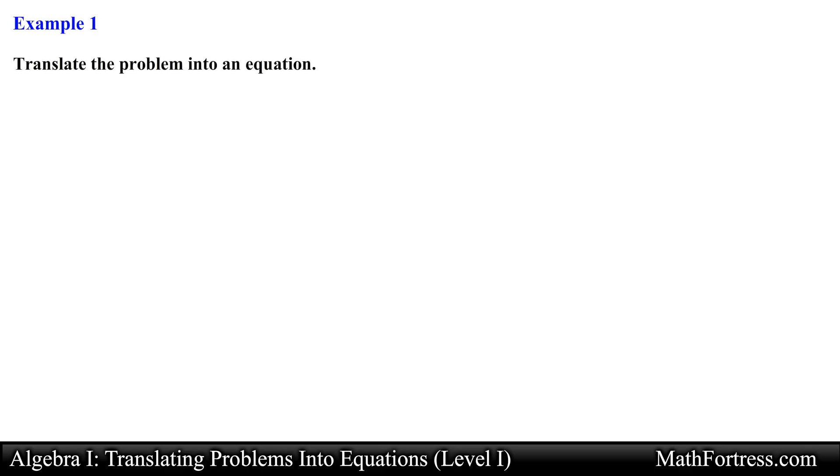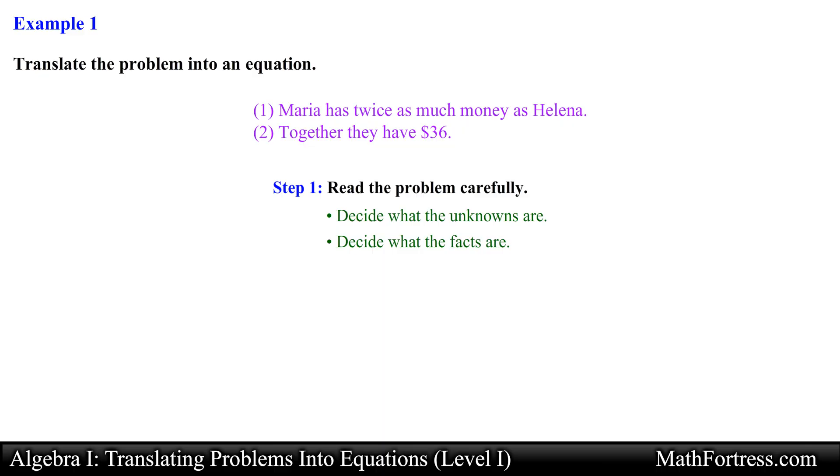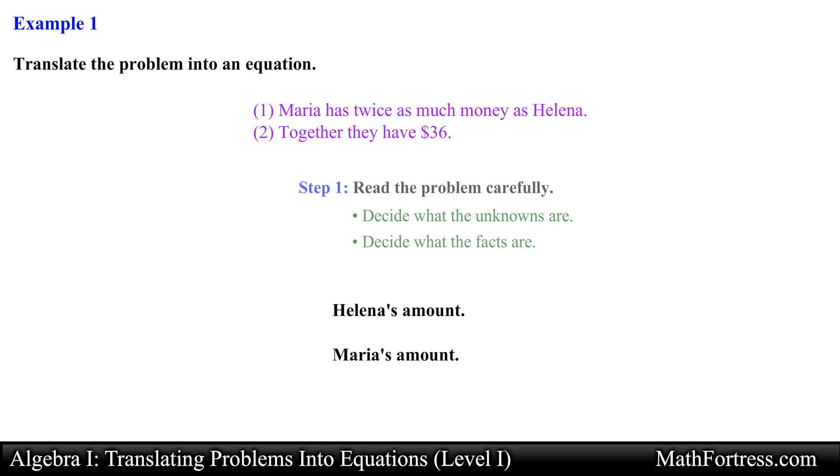Translate the problem into an equation. Maria has twice as much money as Elena. Together they have 36 dollars. Alright step 1 is to read the problem carefully and determine the unknowns and the facts. The facts of this problem are represented by the numbered sentences. Notice that in this problem the unknowns are the amount of money that Maria and Elena each have since we are not explicitly told how much money they have in their possession. Rather we are given a relationship of this amount between the two persons. This relationship will be used in step 2.